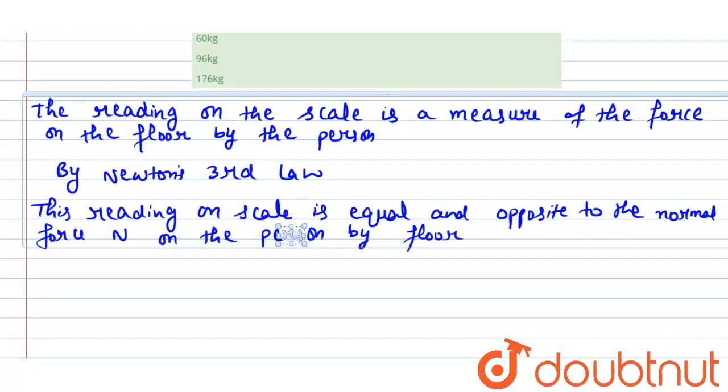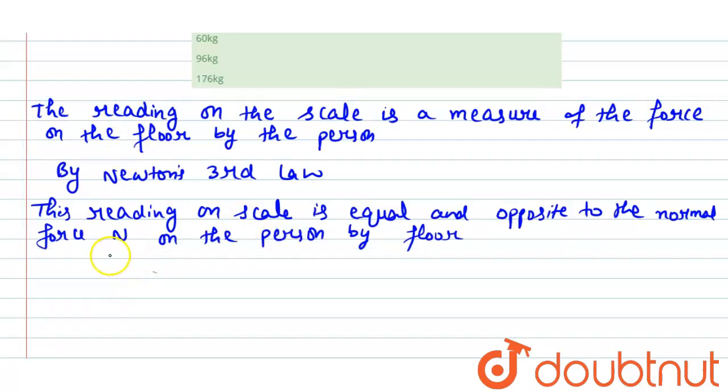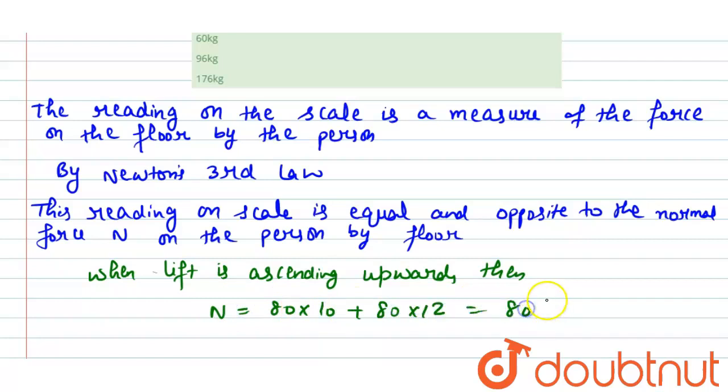So we can say that when lift is ascending upward, then normal force will be 80 into 10 plus 80 into 12, so it will be equal to 80 into 10 plus 12, so it will be 960, right.